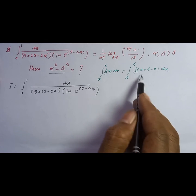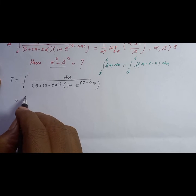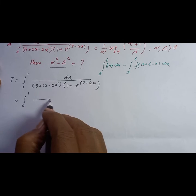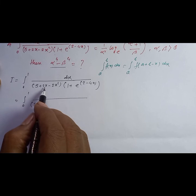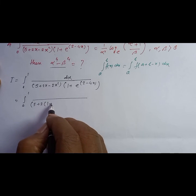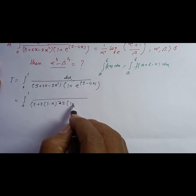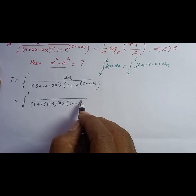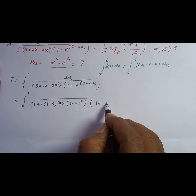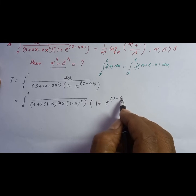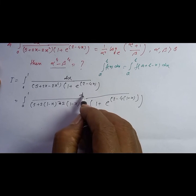Now we apply the King's property. This equals integration from 0 to 1 of dx divided by (5 + 2(1-x) - 2(1-x)²) times (1 + e^(2 - 4(1-x))).